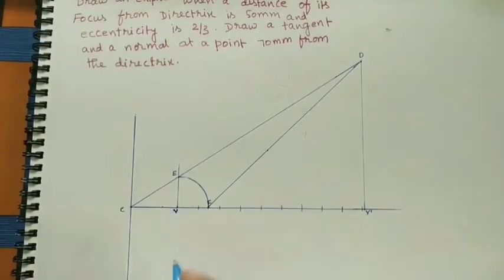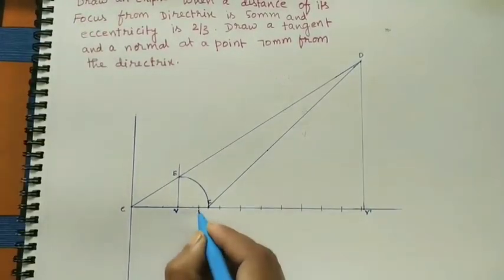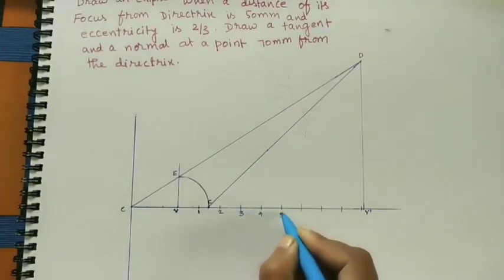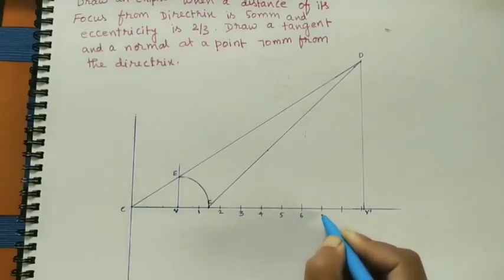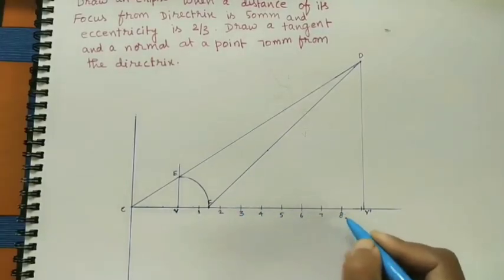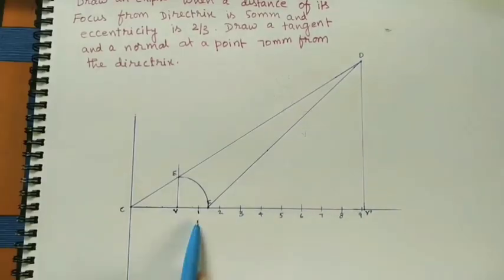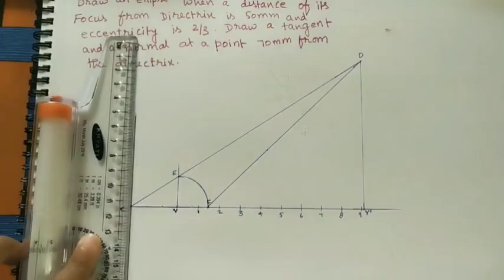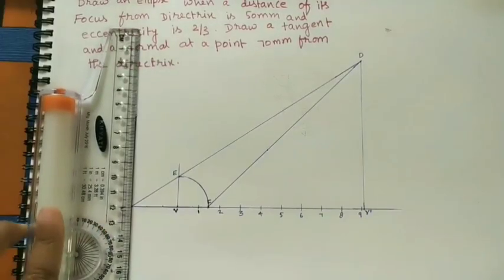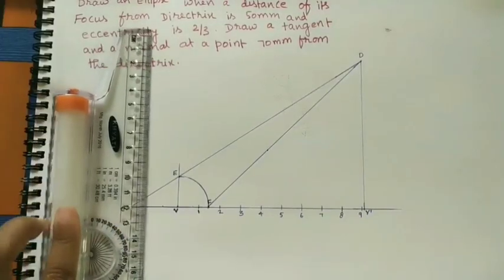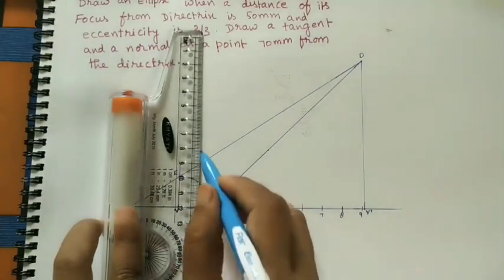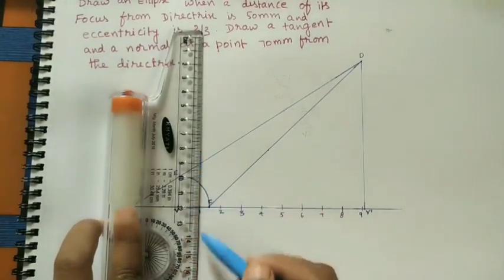We are taking 9 points. Give the numbering: 1, 2, 3, 4, 5, 6, 7, 8, 9. At all these points, draw the vertical lines. For doing the vertical parallel lines, I am using the roller scale. At point 1, draw the vertical line and extend this line both sides.